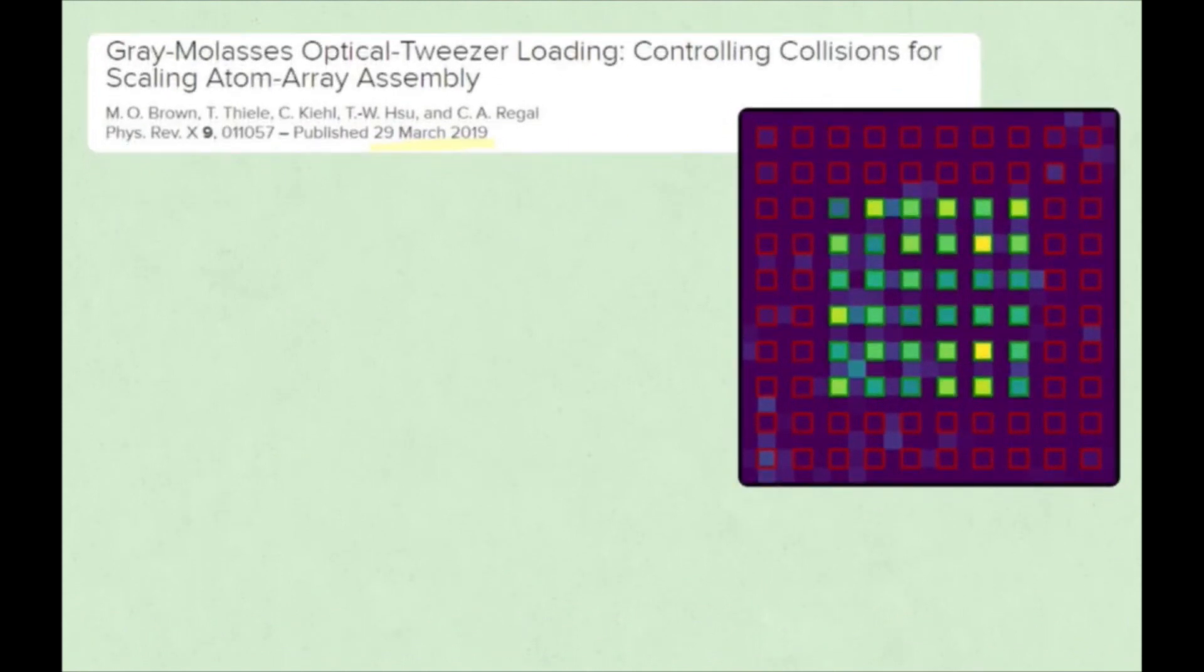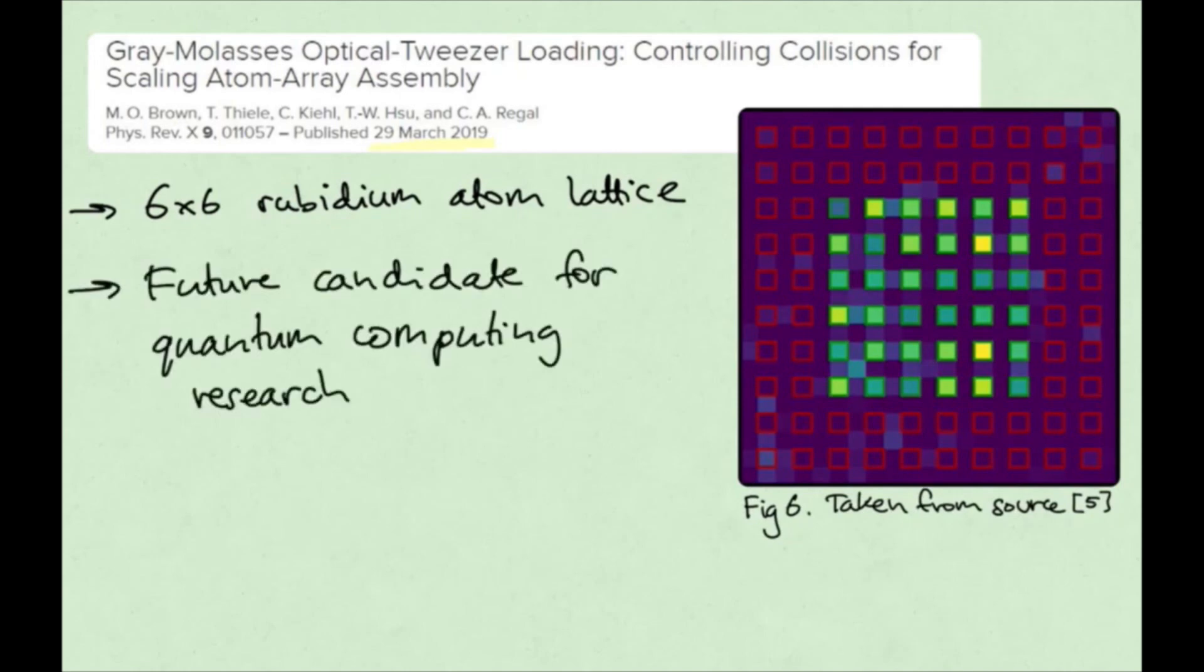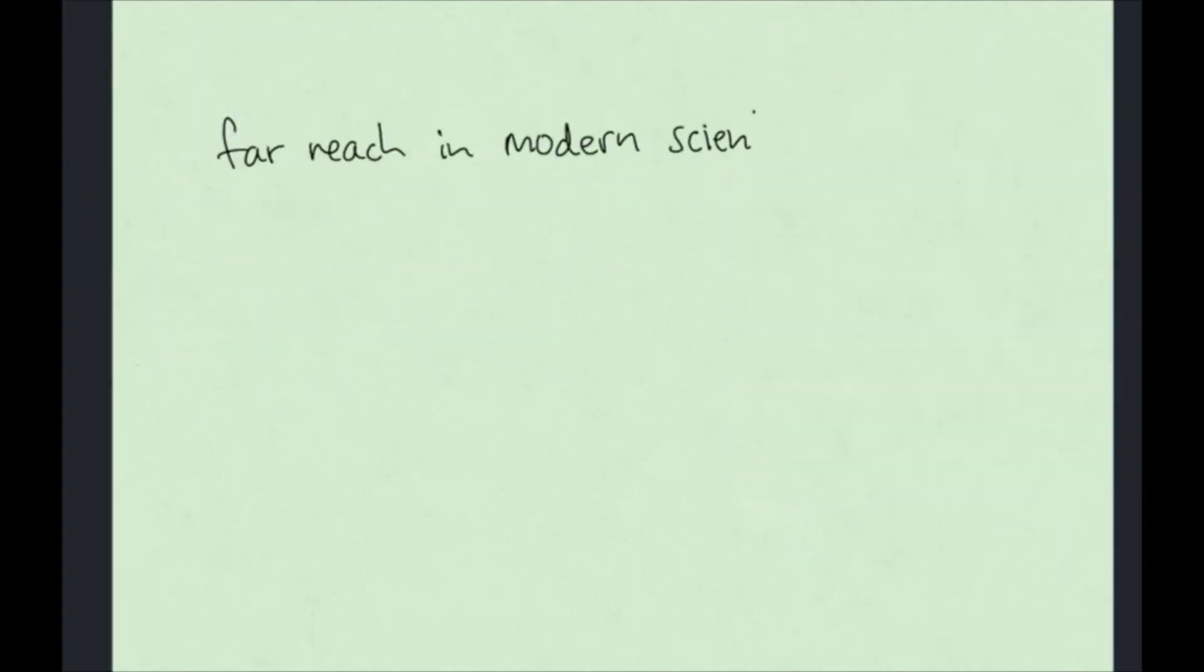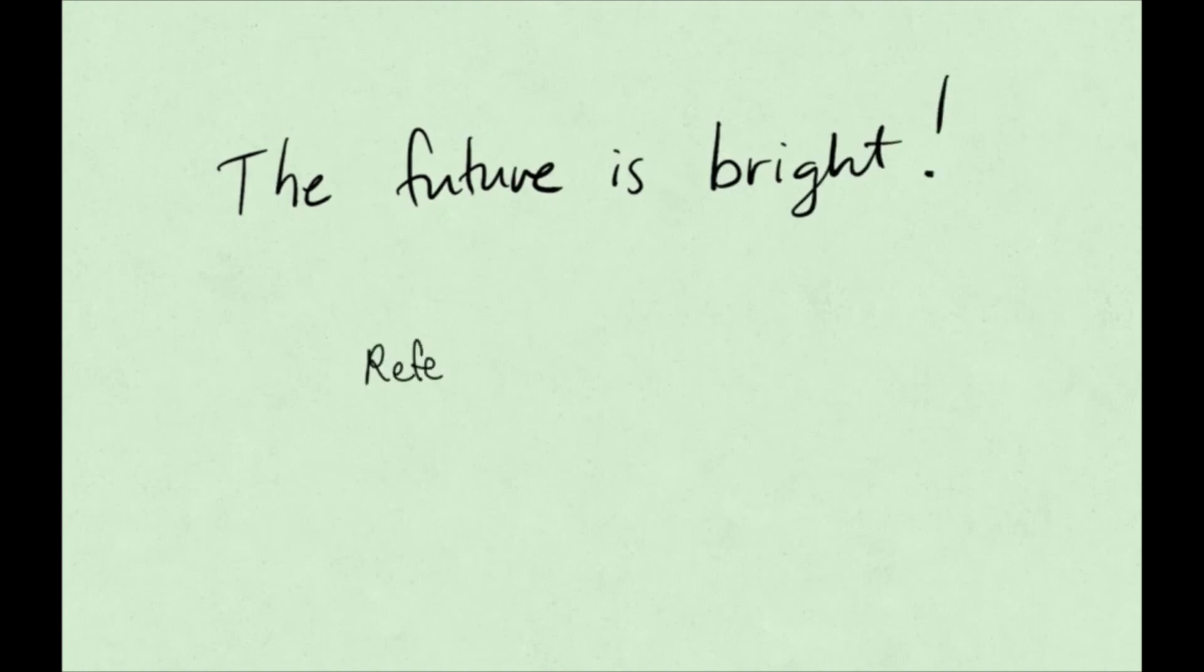Very recently, a group has been able to isolate and organize rubidium atoms more efficiently thanks to an optical tweezer array. Stable lattices like this can be used to test interesting effects like quantum entanglement. Optical tweezers have a far reach in modern scientific research, so many interesting applications might be yet to come. We include the references in the description and encourage you to find out more.